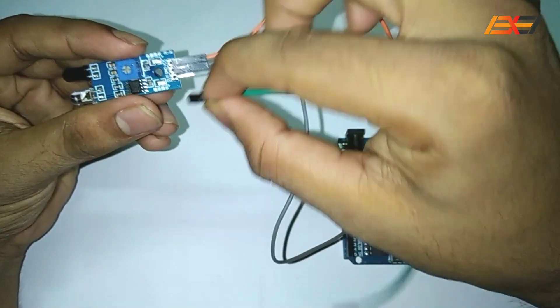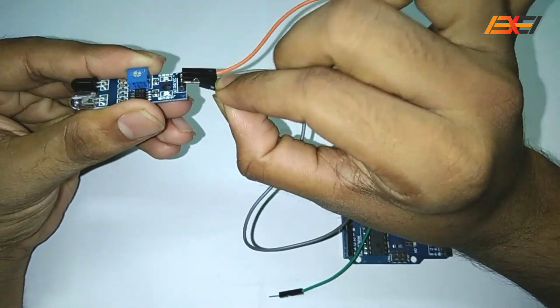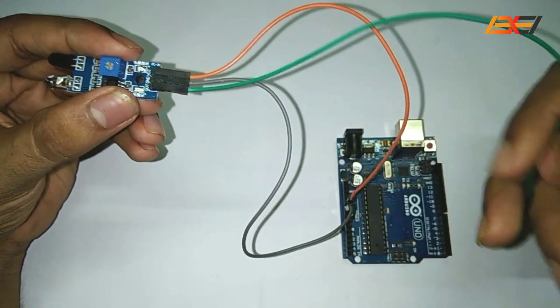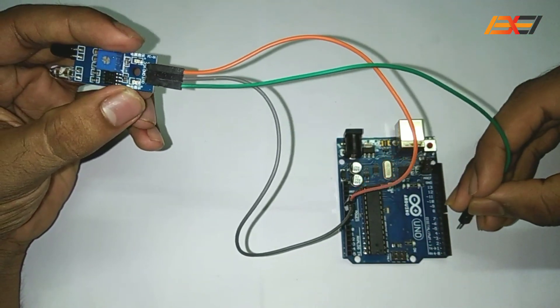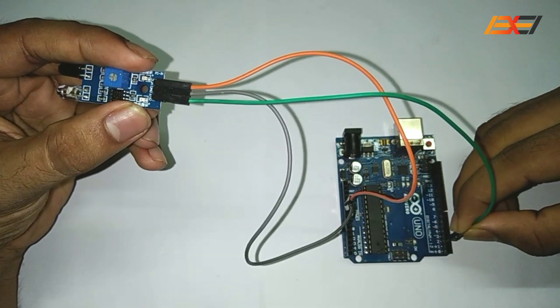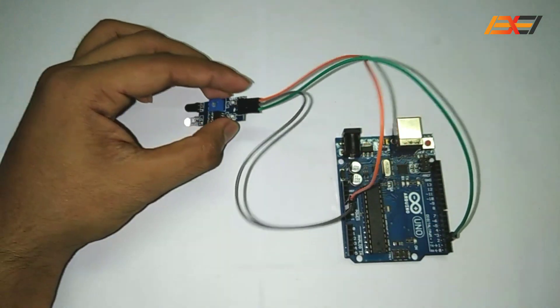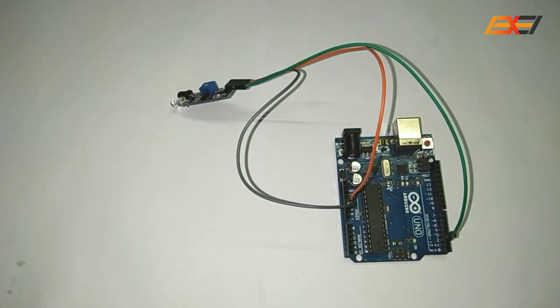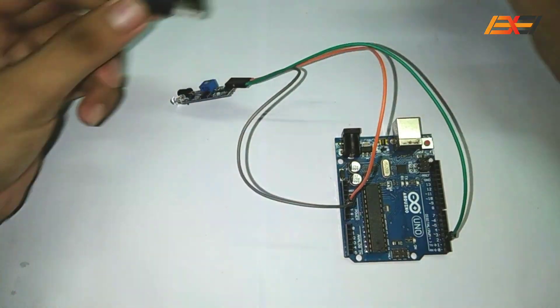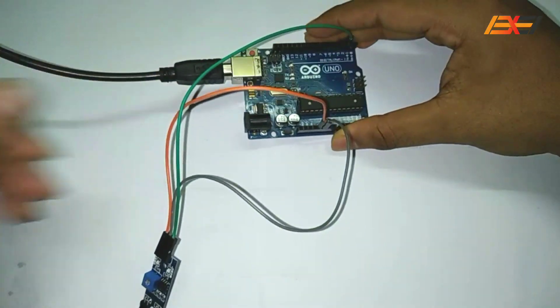Now the V output pin of this IR sensor is connected to pin 2. This is pin 2 of Arduino UNO board. The Arduino UNO board is connected to computer or laptop through this USB cable.